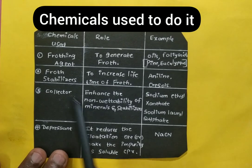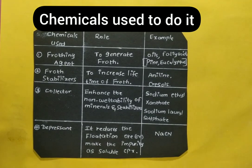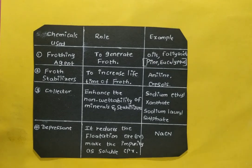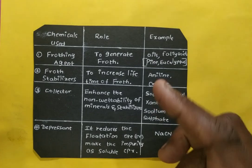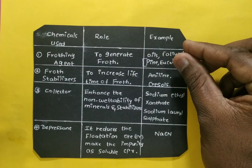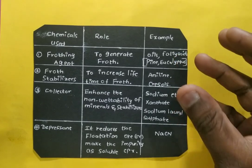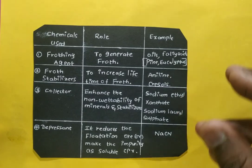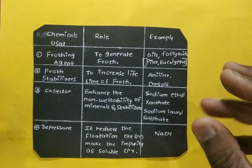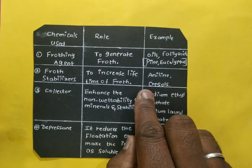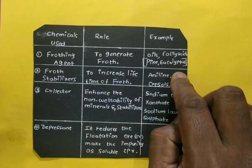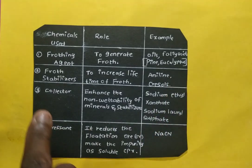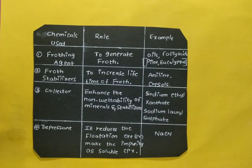The second chemical is froth stabilizers. These are added because the froth or bubbles may be unstable and have a very short lifetime. To increase the lifetime of the froth, we add aniline and creosol, which act as froth stabilizers.